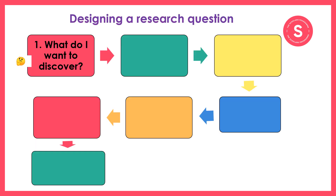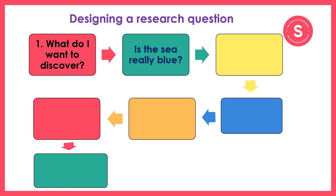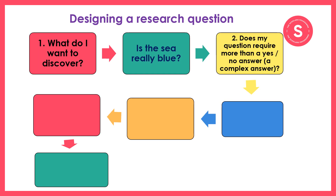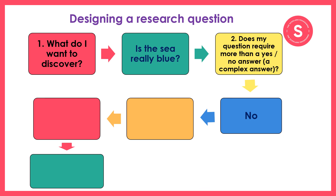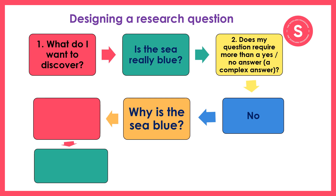Let's have a look at a flowchart that will help us design a good research question. The first thing I'm going to ask myself is: what do I want to discover? I'm interested in the sea and want to know if it is blue, so I'm writing the research question: 'Is the sea really blue?' I'm then going to ask: does my question require more than a yes or no answer? It does not, because someone could say yes it is really blue or no it isn't. So I'm going to rewrite my question to: 'Why is the sea blue?' For this answer, you can't say yes or no.